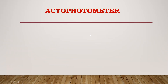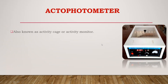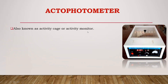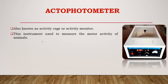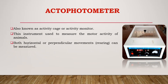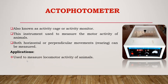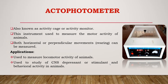Another instrument is the actophotometer, also known as the activity cage or activity monitor. This instrument is used to measure the motor activity or locomotor activity of the animal. Both horizontal and perpendicular movement — that is, rearing — can be measured. A detailed working video is already uploaded on my YouTube channel. It is used to study CNS depressant or CNS stimulant types of drugs and behavioral activity in animals.